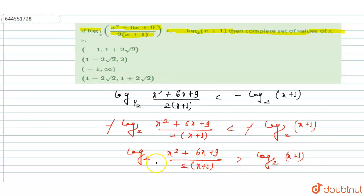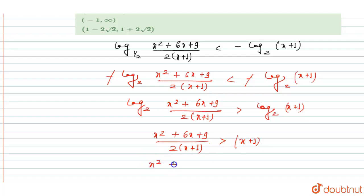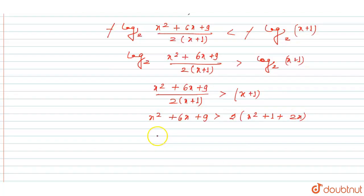Both sides have the same base for the log, so we can write (x² + 6x + 9) / (2(x + 1)) is greater than (x + 1). Then x² + 6x + 9 is greater than 2(x² + 1 + 2x). Simplifying, we get x² − 2x − 7 ≤ 0.